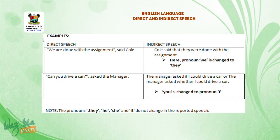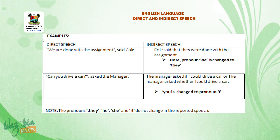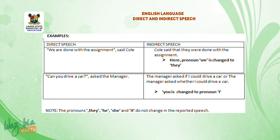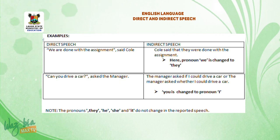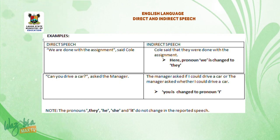Examples: 'We are done with the assignment,' said Cole. — Cole said that they were done with the assignment. Here, pronoun 'we' is changed to 'they'. 'Can you drive a car?' asked the manager. — The manager asked if I could drive a car, or the manager asked whether I could drive a car. 'You' is changed to pronoun 'I'.